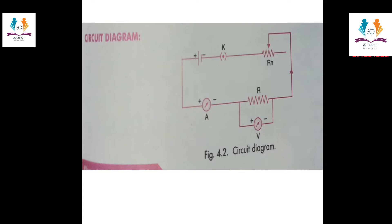The same terminal is joined with the positive terminal of the voltmeter. The negative terminal of the voltmeter is joined to the second terminal of the resistor. The resistor is joined with one terminal of the rheostat, whose second terminal is joined with one terminal of the key, and the second terminal of the key is joined with the negative terminal of the battery.